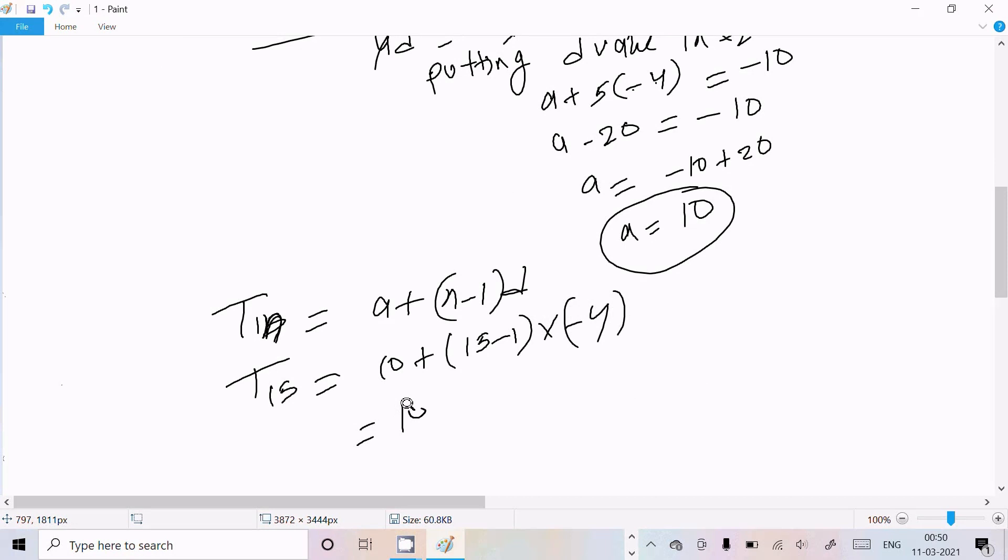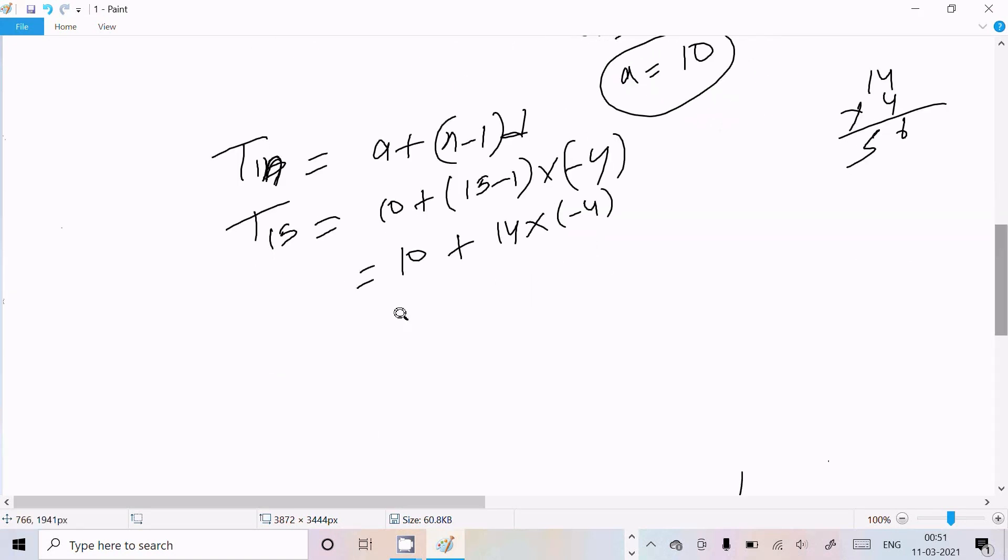So here 10, this is now 14 × (-4). So 14 × 4 is 56. So this is now 10 - 56, so this becomes -46. So now the 15th term is -46.